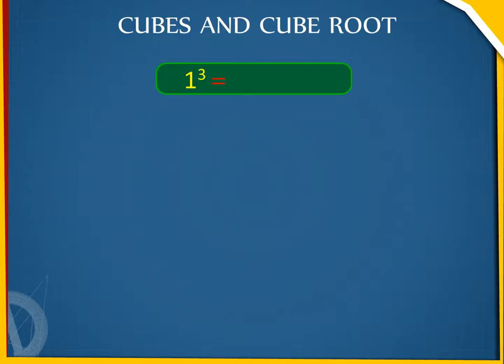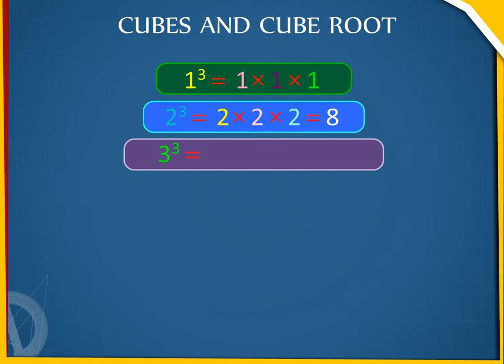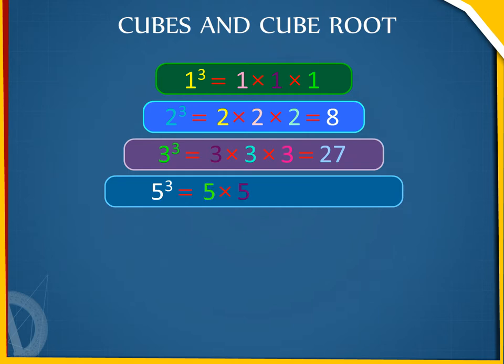We know that 1³ = 1 × 1 × 1 = 1, 2³ = 2 × 2 × 2 = 8, 3³ = 3 × 3 × 3 = 27, and 5³ = 5 × 5 × 5 = 125.